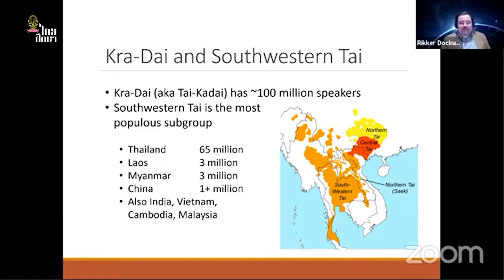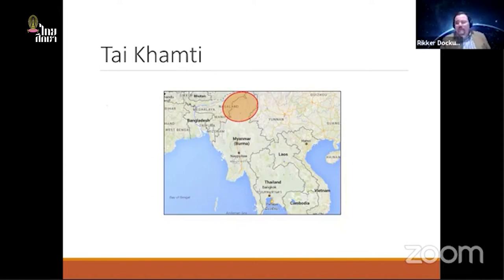I'll go over this quickly as most people here should be familiar with the family and with the Tai branch specifically. Thai — the southwestern Tai branch — is the one that houses Thai Khamti. There are three geographic areas where the language is spoken: northeast India, across the Naga Hills in Sagaing Division of Myanmar, and in Kachin State of Myanmar.